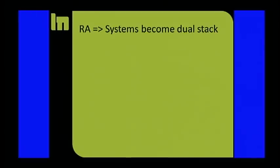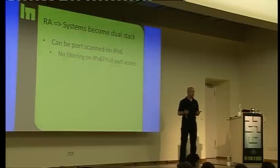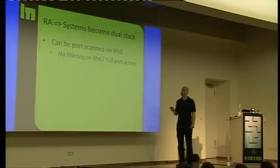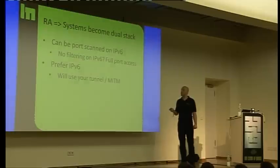Send a router advertisement and systems become dual stack. Once there's a router advertisement, all systems which are in default configuration become dual stack. You can port scan on IPv6. Some commercial firewalls don't filter IPv6 but just allow it through. Full port scanning on the local network. Just by sending one router advertisement.